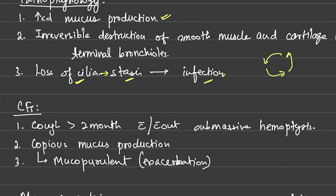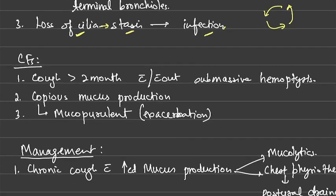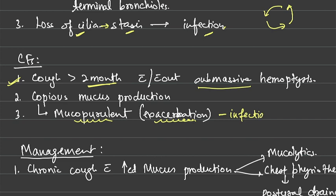This vicious cycle eventually ends in destruction of cartilage and smooth muscle, leading to permanent dilatation. Clinical features include cough lasting more than two months with or without submassive hemoptysis, and copious mucus production which may become mucopurulent upon exacerbation due to infection.